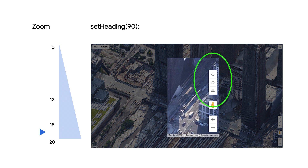Whenever 45-degree imagery is shown, the rotate control will also become visible on the map, enabling the user to toggle tilt and rotate the view in 90-degree increments in either direction. To hide the rotate control, set rotate control to false.